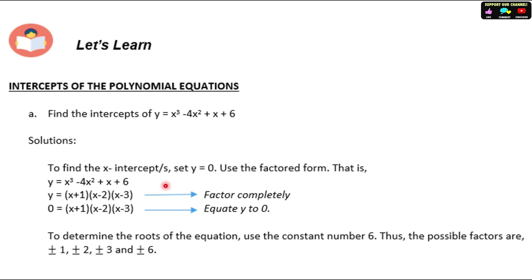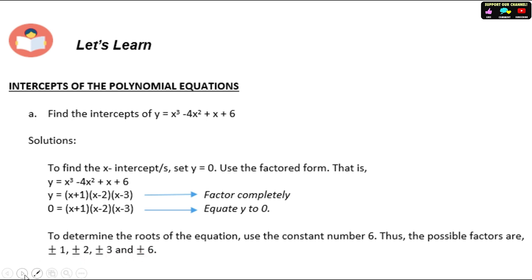Use the factored form. The equation is factored completely and equated to zero. To determine the roots of the equation, use the constant number 6 — the last term. The possible factors of 6 are: positive/negative 1, positive/negative 2, positive/negative 3, and positive/negative 6.